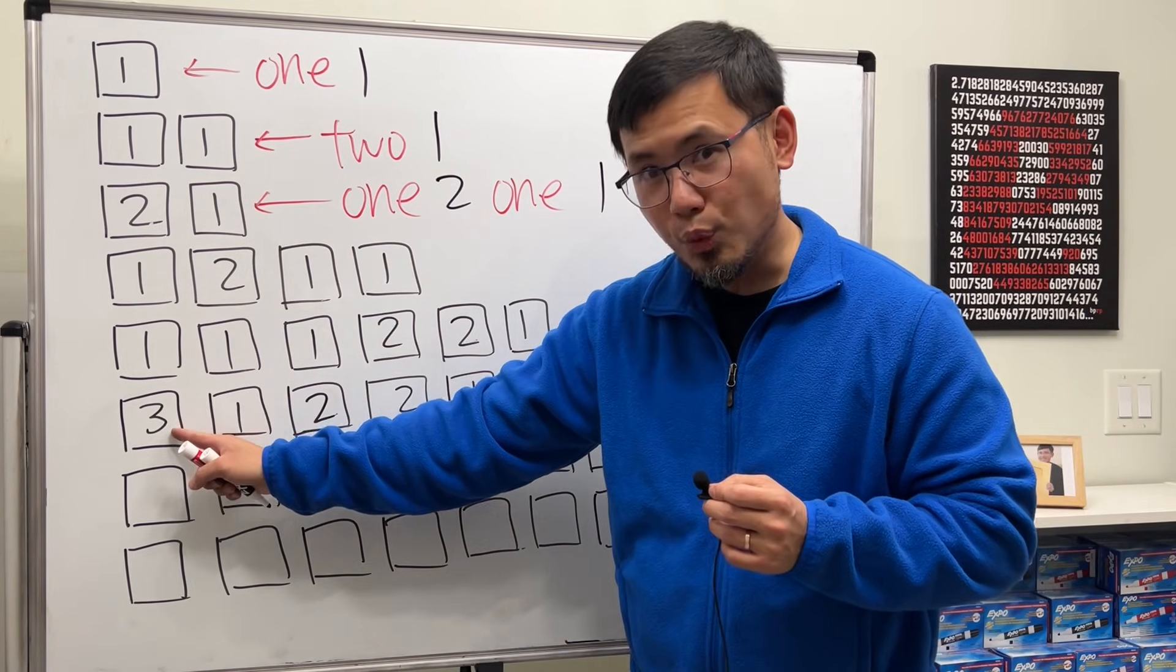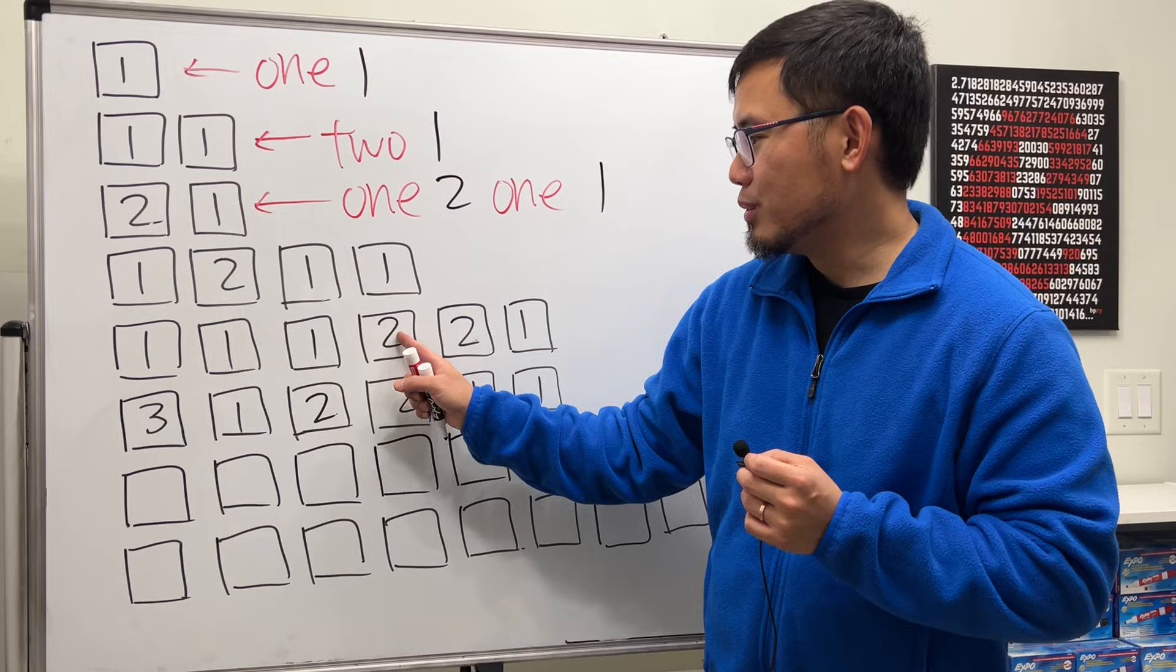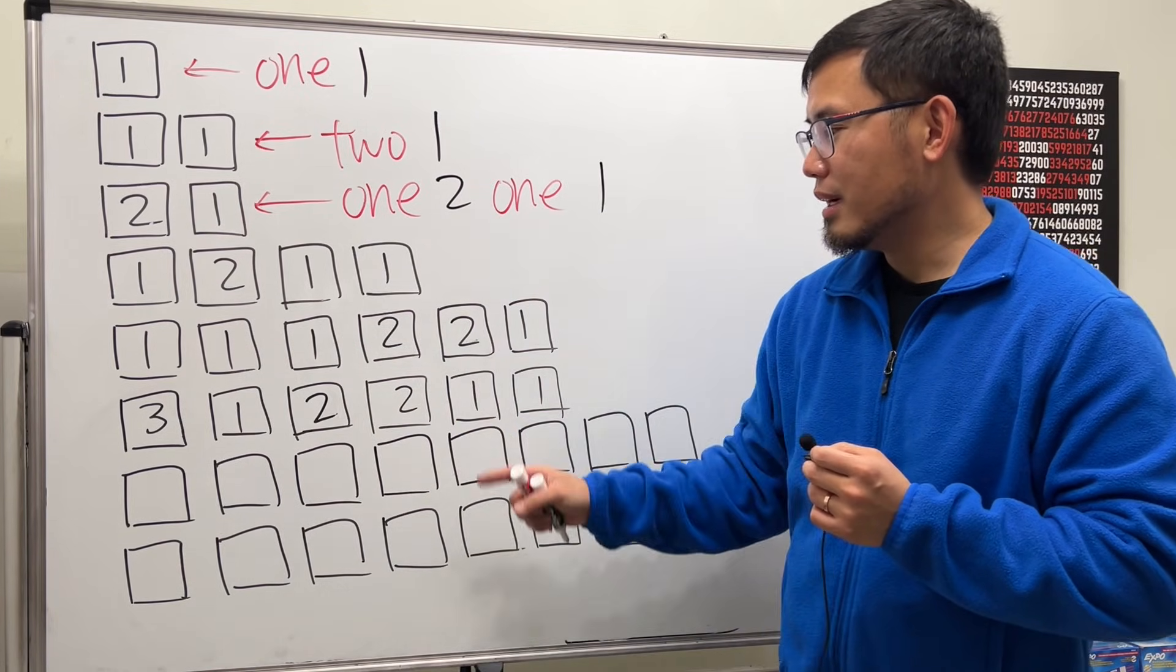Then the next one is we have one one, one two, and then we have two ones at the next one.